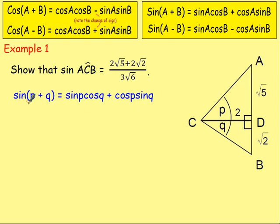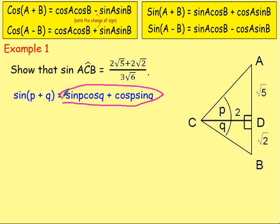So sin(ACB) is going to be the same as sin(p + q). We can write down sin(p + q), and going to the addition formulae, we know that sin(p + q) can be written as sin p·cos q + cos p·sin q, replacing a and b with p and q.